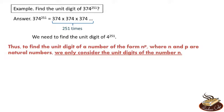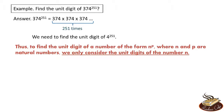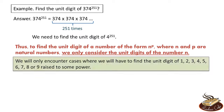To find the unit digit of a number of the form n raised to the power p, where n and p are natural numbers, we only consider the unit digit of n. This means we will only encounter cases where we have to find the unit digit of 1, 2, 3, 4, 5, 6, 7, 8, or 9 raised to some power.